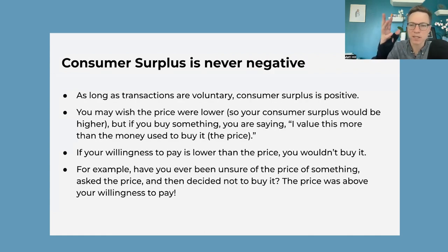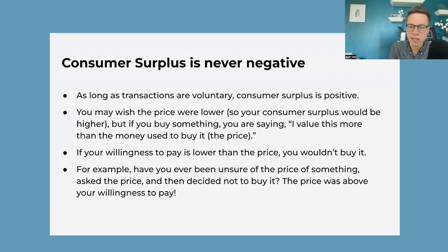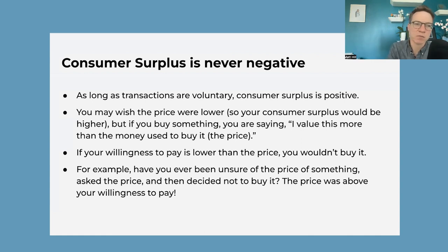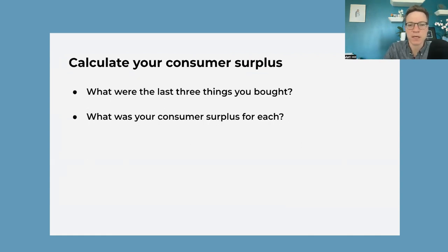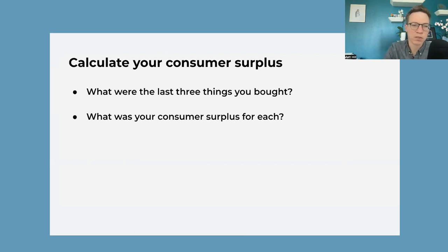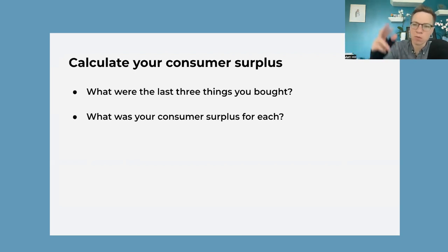This is very important because we never think about consumer surplus. We buy things and get mad because we say it only costs them 50 cents to make this and they're charging me five bucks. But when you're buying it, you're saying I value it at actually more than five bucks. So you are getting some consumer surplus every time you buy something. Ask the students to write down the last three things they bought and try to calculate their consumer surplus — what is the most they would have paid, and then what did they pay? That is their consumer surplus.